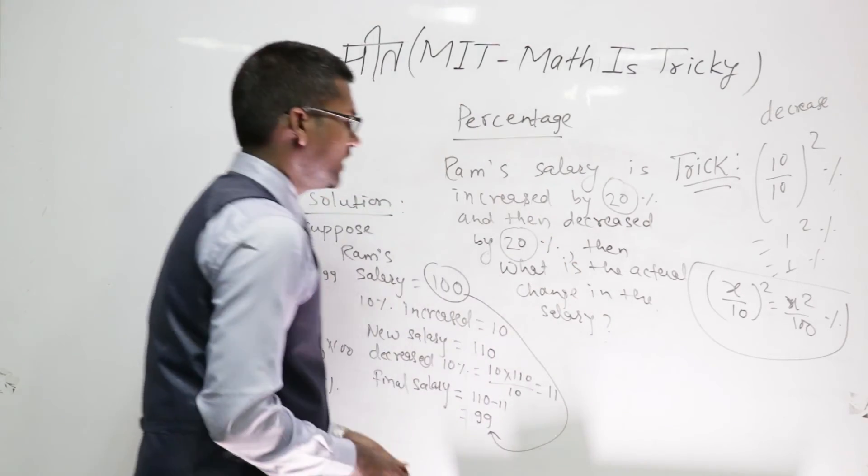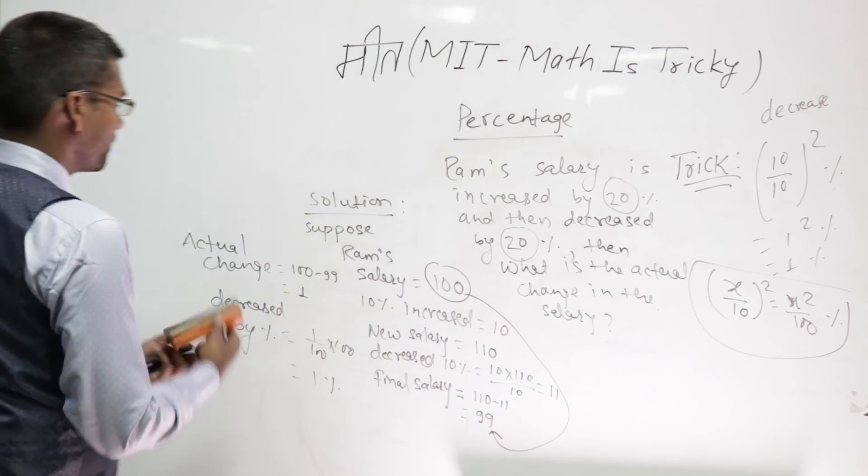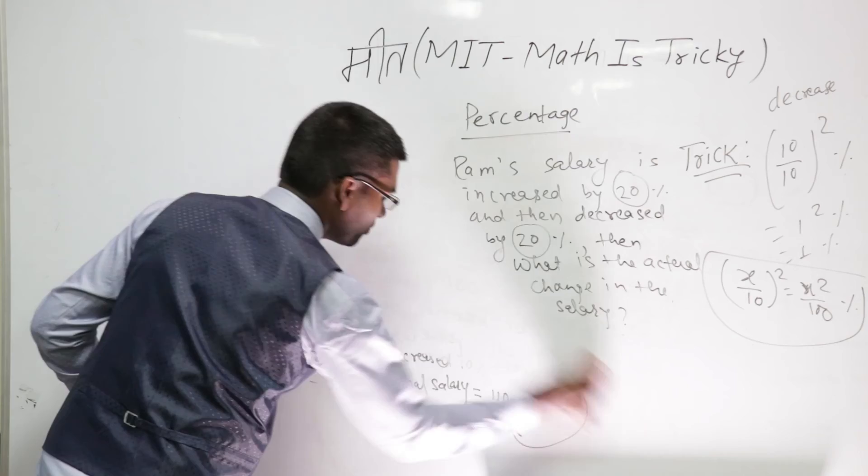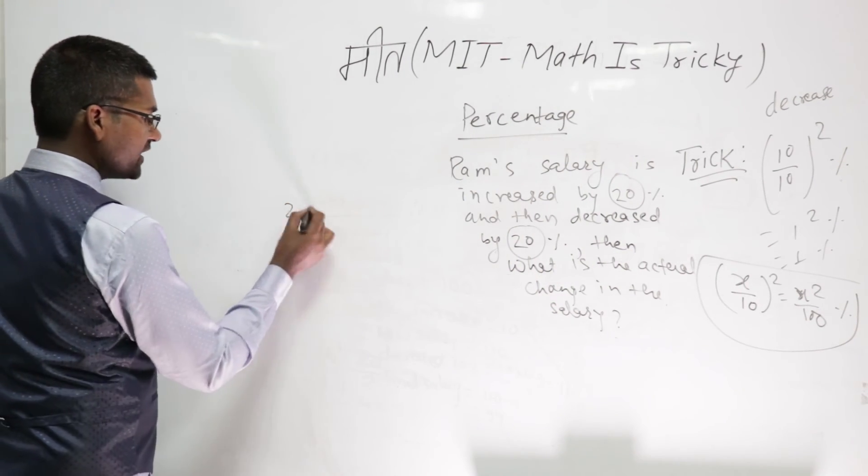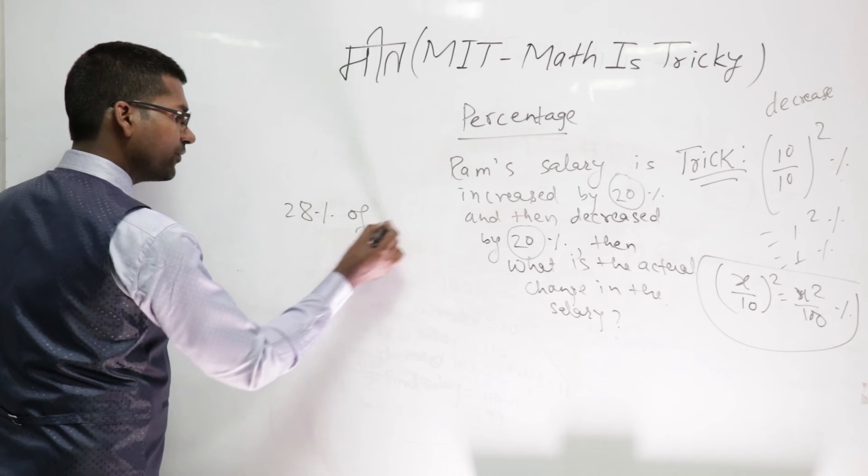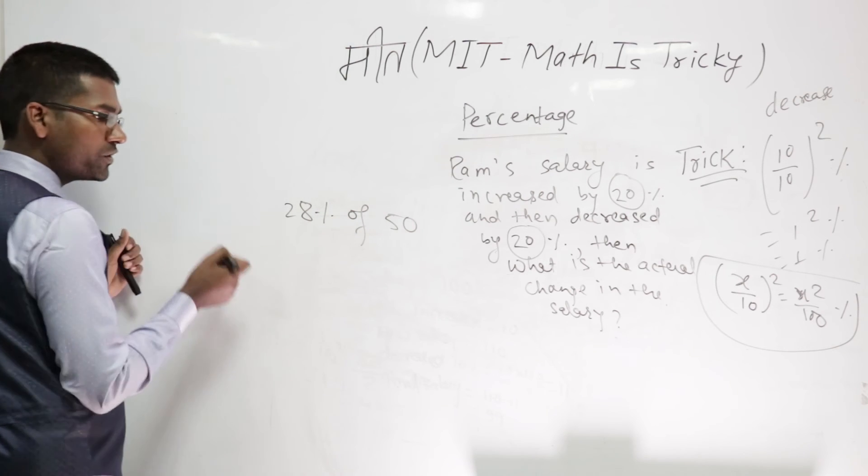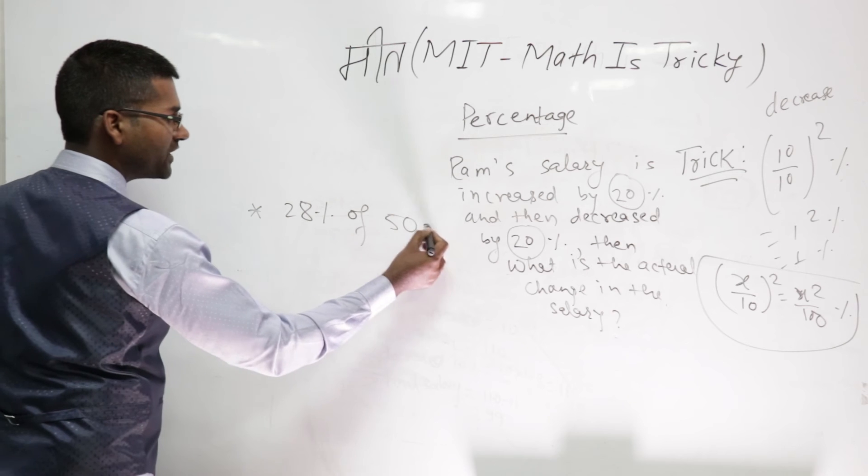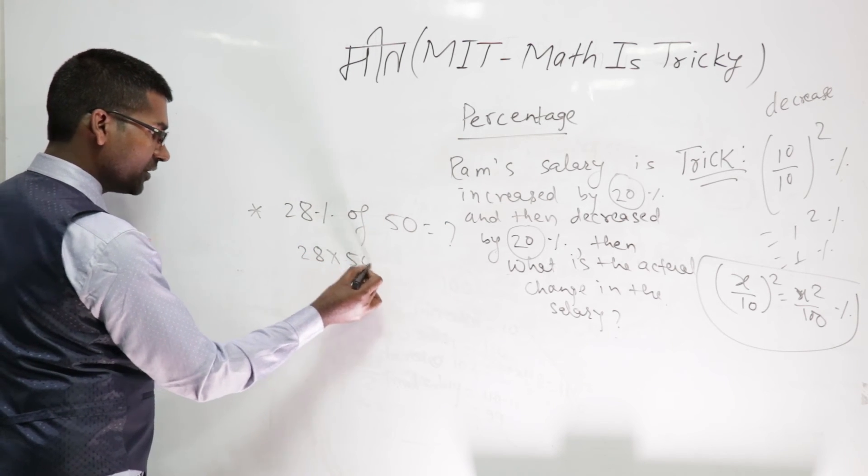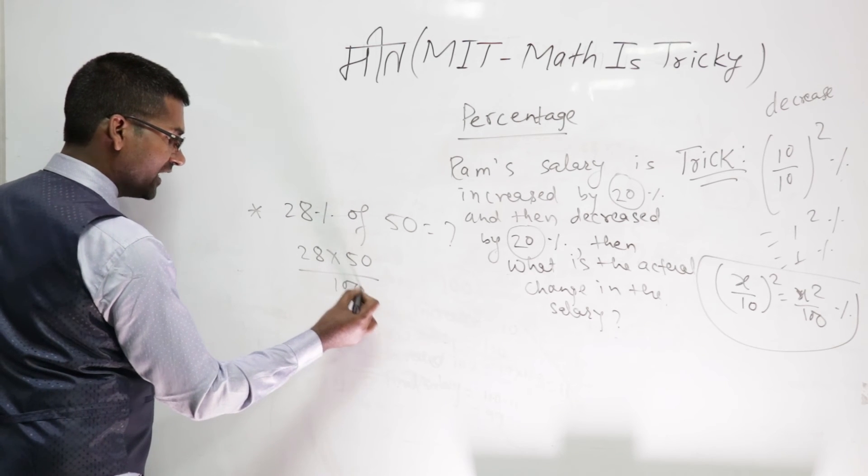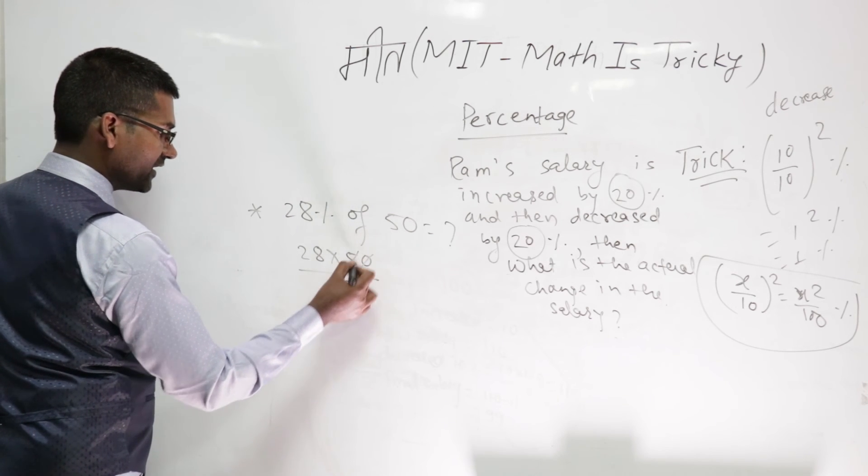Let's see another trick about percentage. Very simple here: 28 percent of 50. What we actually do? What is 28 percent of 50? Most of us will do 28 into 50 by 100, and then we'll cut this and the answer is 14.